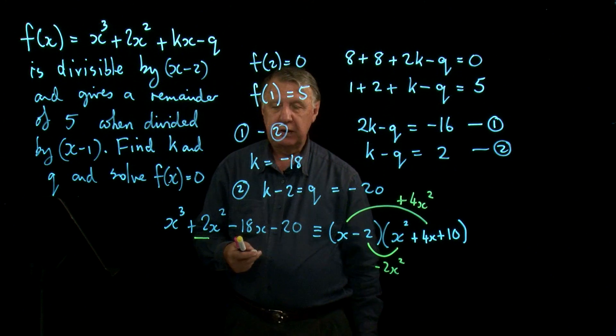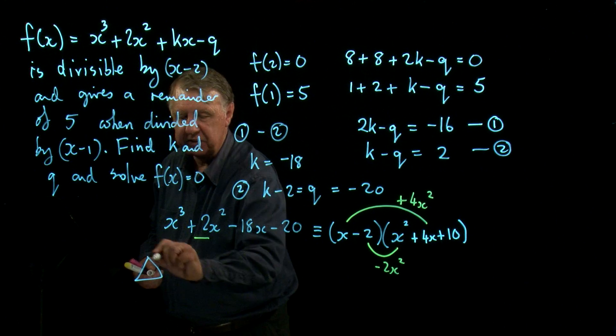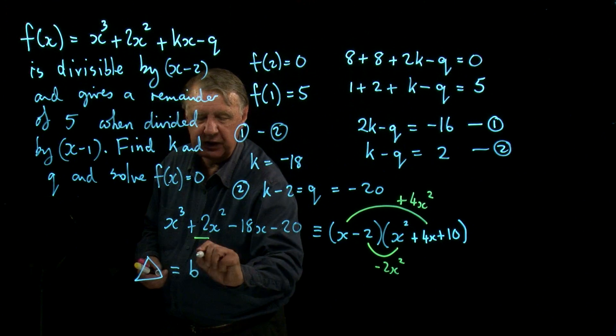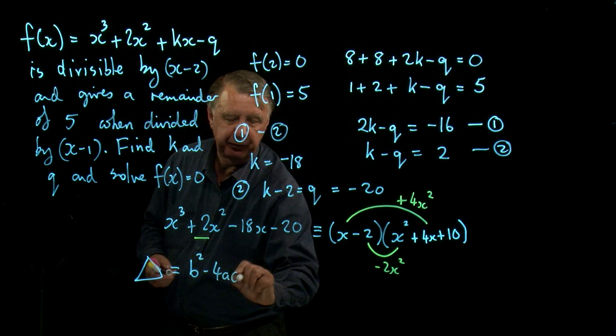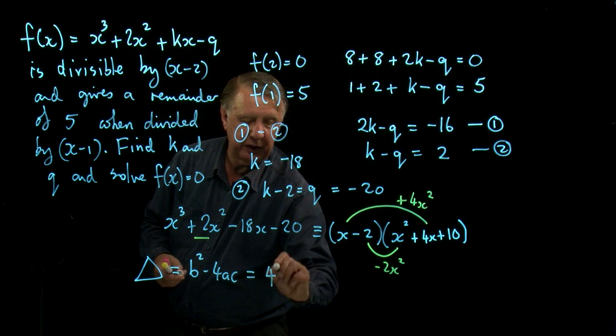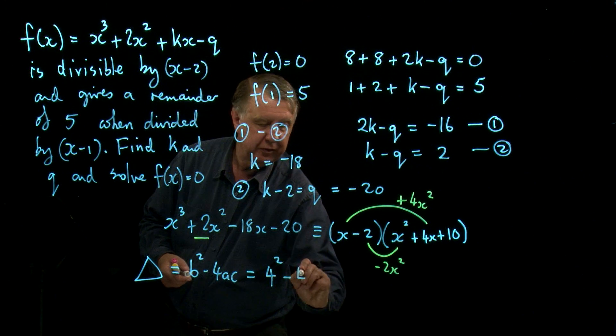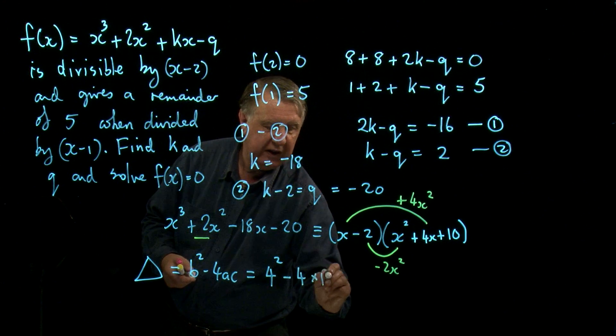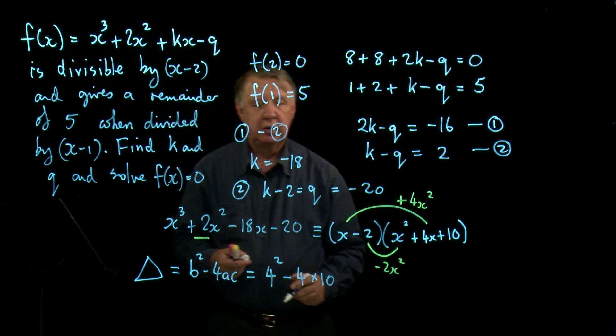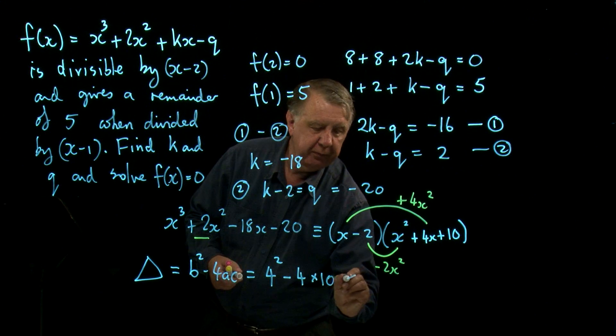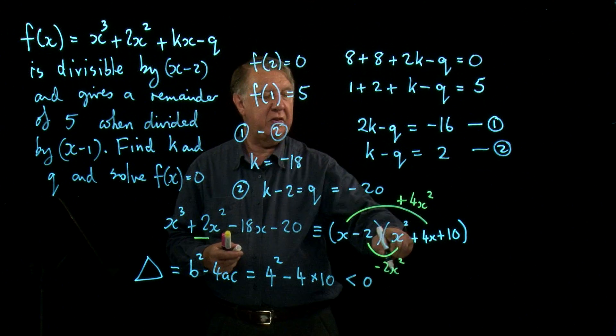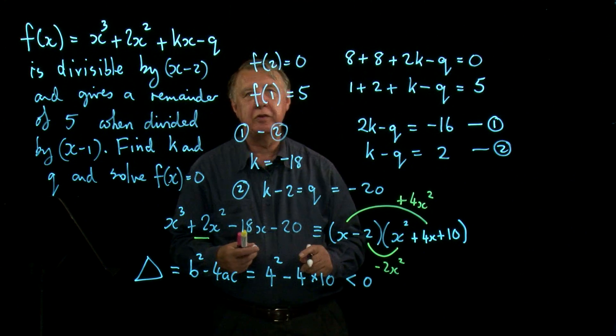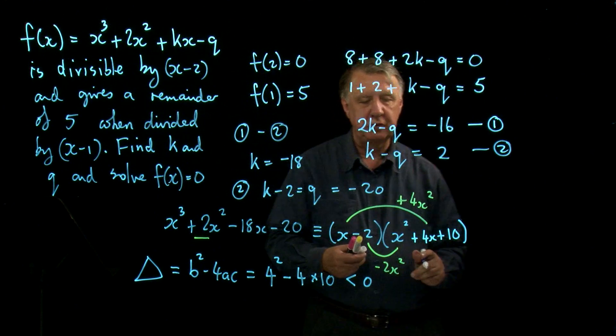I've now got x equals 2 as one solution to function x equals 0 for this quadratic. And let's check the discriminant of that quadratic. Remember, discriminant b squared minus 4ac. So that's 4 squared minus 4 times 10, which is negative. Which means that that has no solutions. The quadratic bit has no solutions.